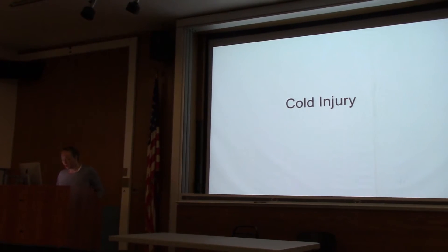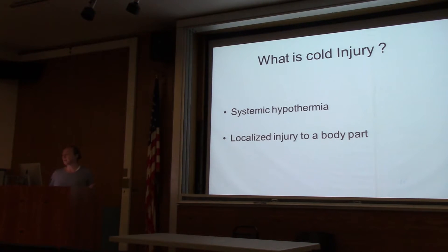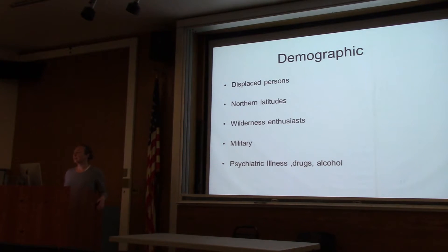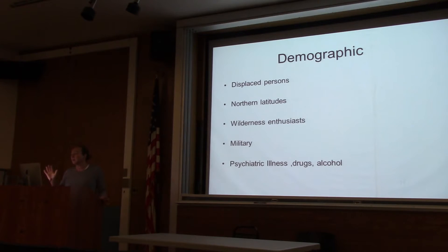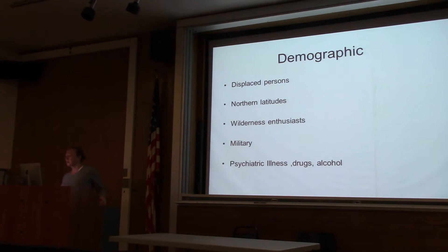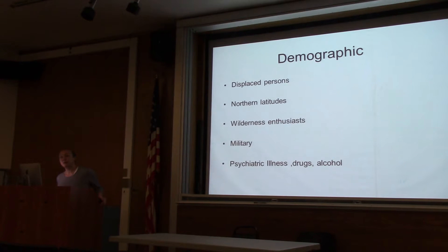Now a slightly shorter talk on cold injury. There are two categories: systemic hypothermia and localized injury to a body part. Cold injury usually affects an extremity. This is relevant for those who take care of displaced persons, people in northern latitudes, those who do cold-weather sports, military personnel, and in Brooklyn, people who may be out on the street on a cold night and come in with frostbite or other cold injuries.